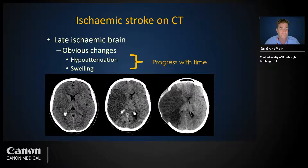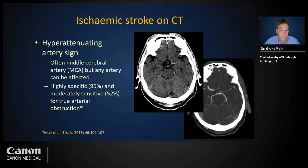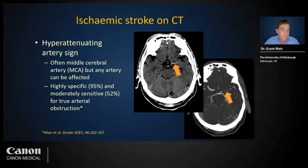The hyper-attenuating or hyperdense artery sign is a highly specific and moderately sensitive marker of arterial obstruction. If present, it is visible soon after onset and is more reliably identified than subtle brain changes. High specificity means that if the sign is present, we can be confident there is a true arterial obstruction, as demonstrated with concurrent angiography. Moderate sensitivity means that if the sign is absent, we cannot be confident — about 50% of arterial obstructions found on CTA are not visible on CT in this way.